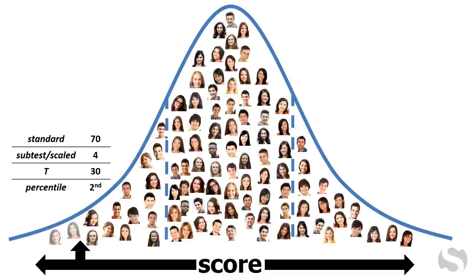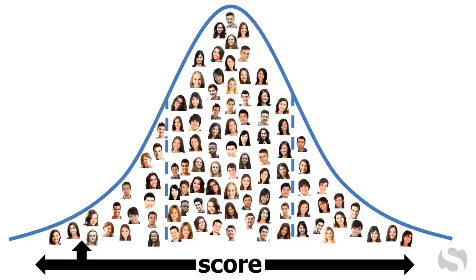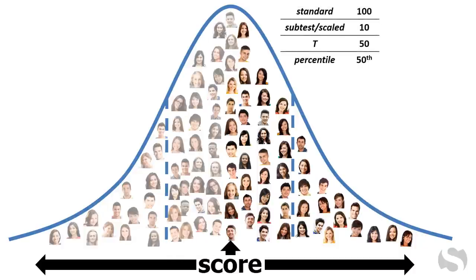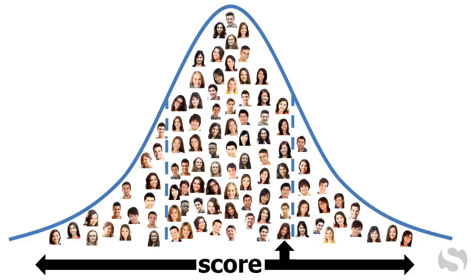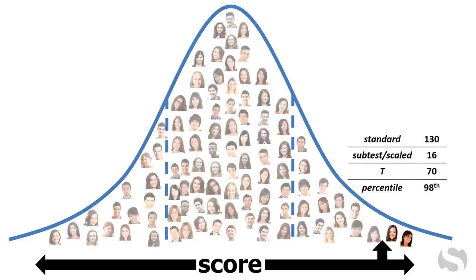Standard scores close to the mean represent performance that's typical for someone that age — a 16-year-old with one of these scores performed better than half of other 16-year-olds. A higher standard score means most same-age peers did not perform as well on that test. At two standard deviations above the mean, a standard score of 130 is the same as a subtest or scaled score of 16 and a T score of 70, all of which are at the 98th percentile — meaning a 16-year-old with one of these scores performed better than 98 out of 100 other 16-year-olds.